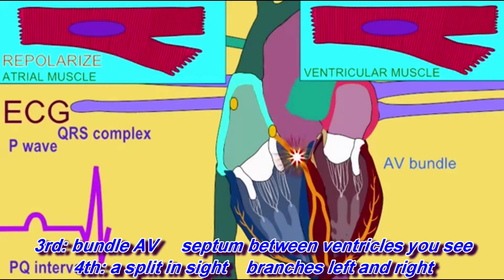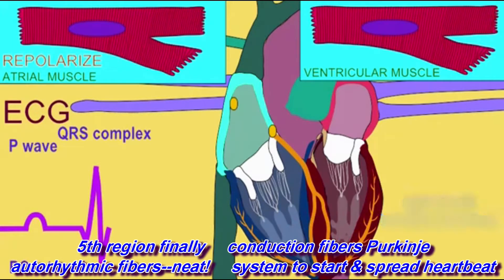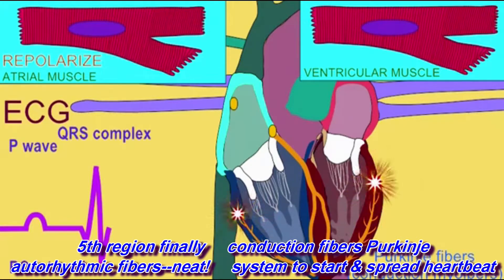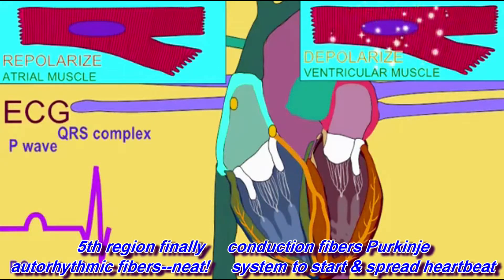Fourth, a split in sight, branches left and right. Fifth region, finally, conduction fibers — Purkinje. Autorhythmic fibers, neat — system to start and spread heartbeat.